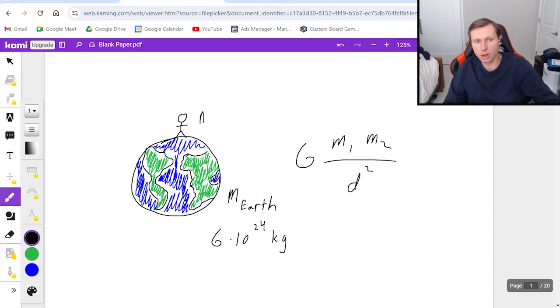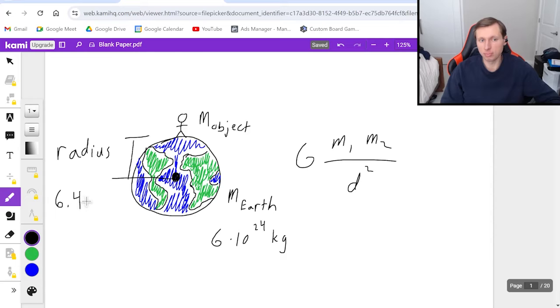Mass two, I'll just call mass of the object. And I'm going to leave it as a variable, I'm not going to plug in a mass. And then the distance between them, you need to realize is the distance from the center of the earth to this person, meaning it's the earth's radius, which I know to be about 6.4 million meters, or 6.4 times 10 to the sixth meters. That's the distance between the two objects, always measuring from the center of gravity, which is the center of the earth.